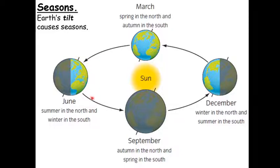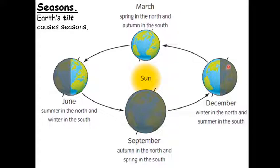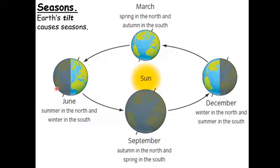Fast forward six months to December: the axis is tilted away from the sun in the Northern Hemisphere. That means we in the UK spend fewer hours receiving sunlight, so winter days are a lot shorter than summer days. Comparing that to the Southern Hemisphere back in June — if the Northern Hemisphere is tilted towards the sun, the Southern Hemisphere is tilted away. So Australia, on the other side, gets shorter days and is actually having its winter in June while we have our summer.